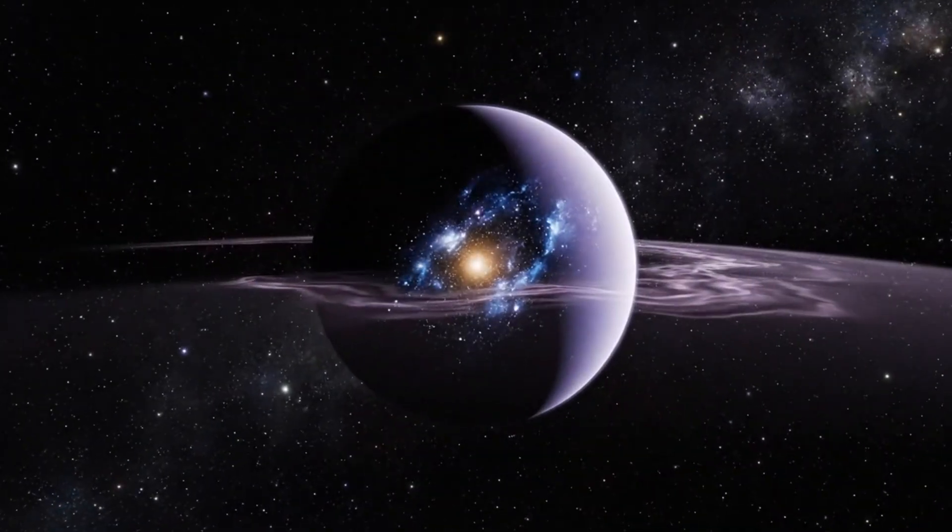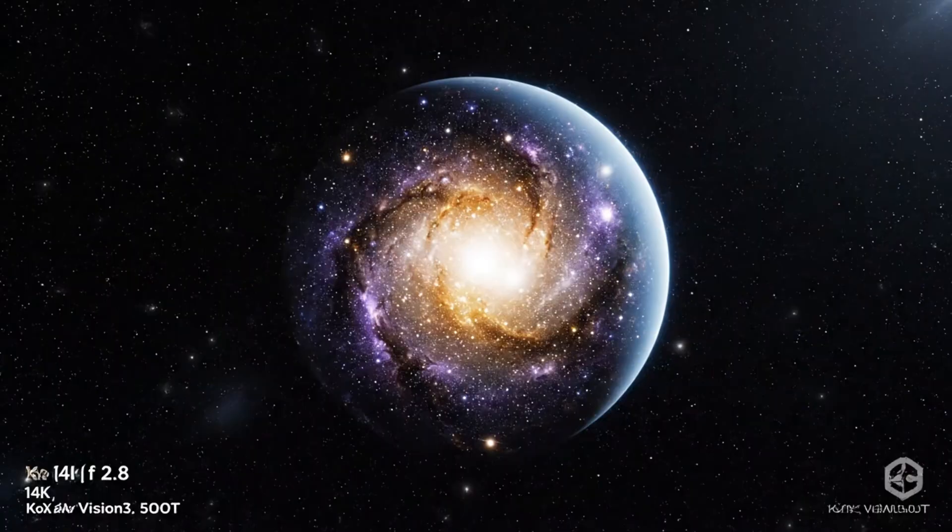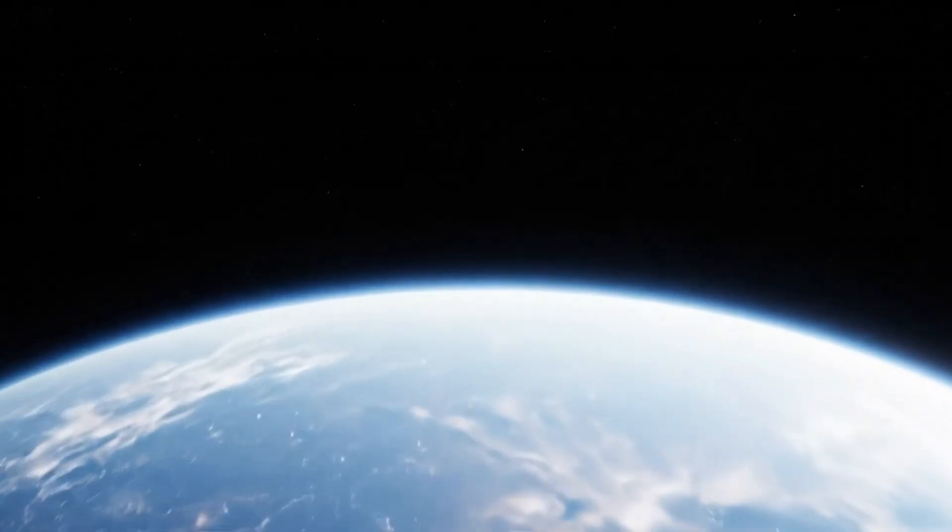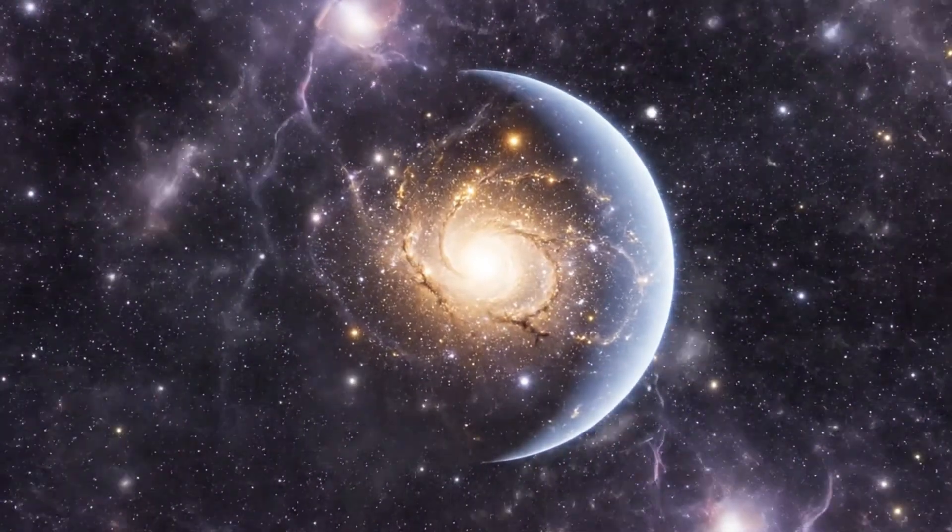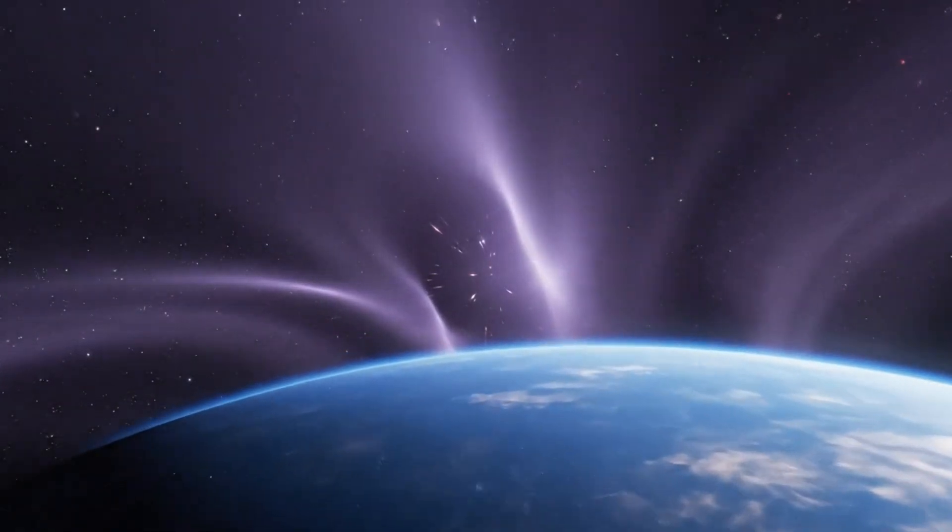The edge of what we can see. Now, we arrive at the edge. The observable universe. A sphere 93 billion light years across. Beyond this, light has never reached us. Those regions exist, but they're forever hidden.